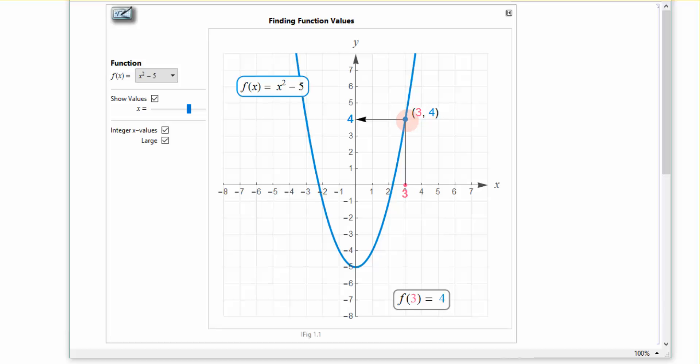So if I were to move this, let's say I move it over here. Here, you can see that by changing the value of x, I'm changing the value of y, which is to say that I am finding different ordered pairs along this graph.